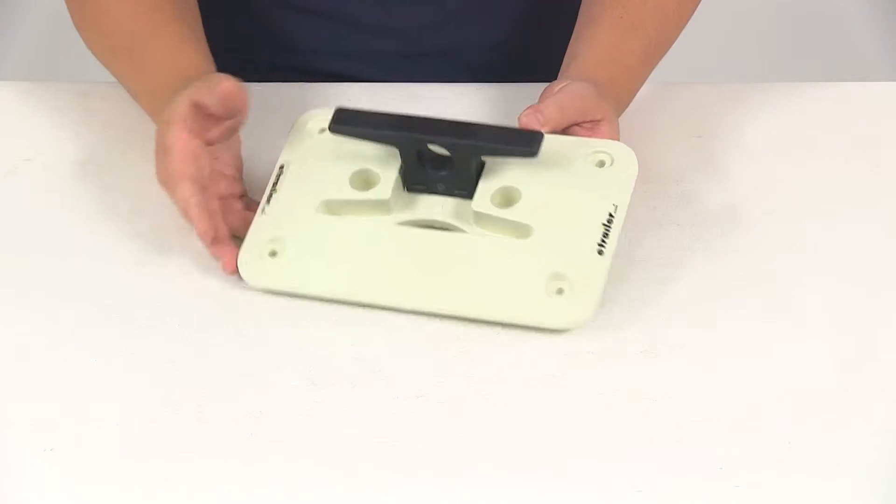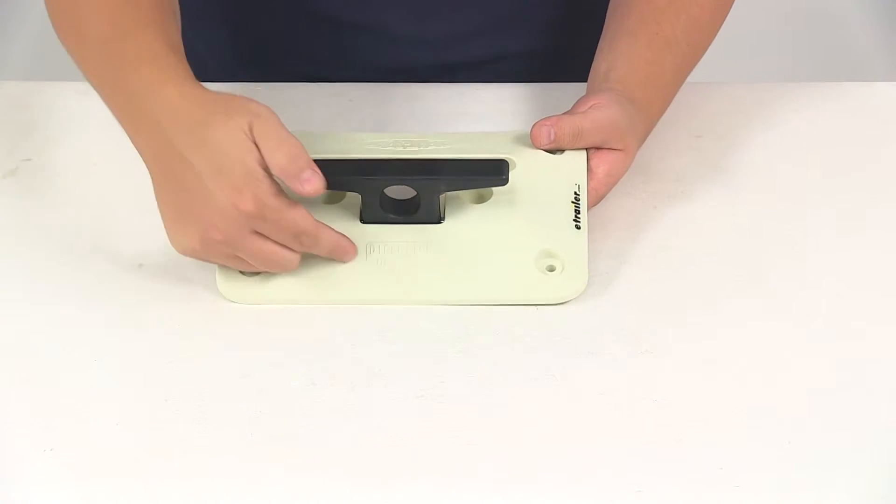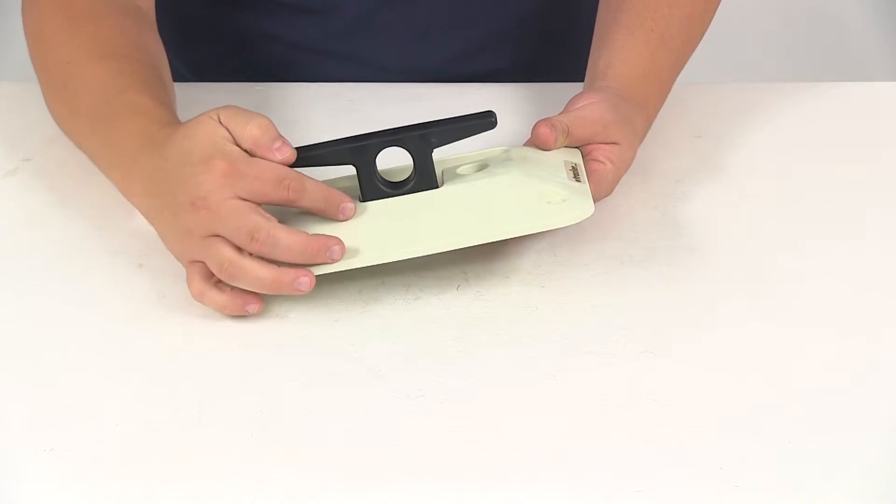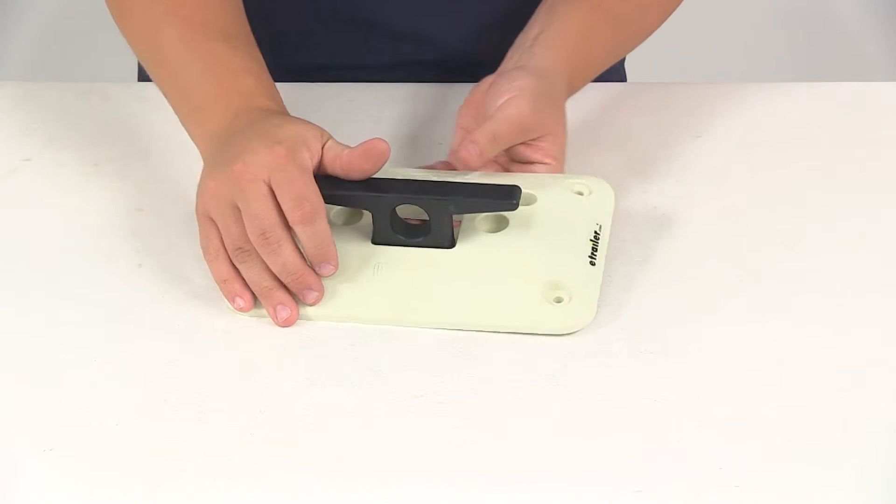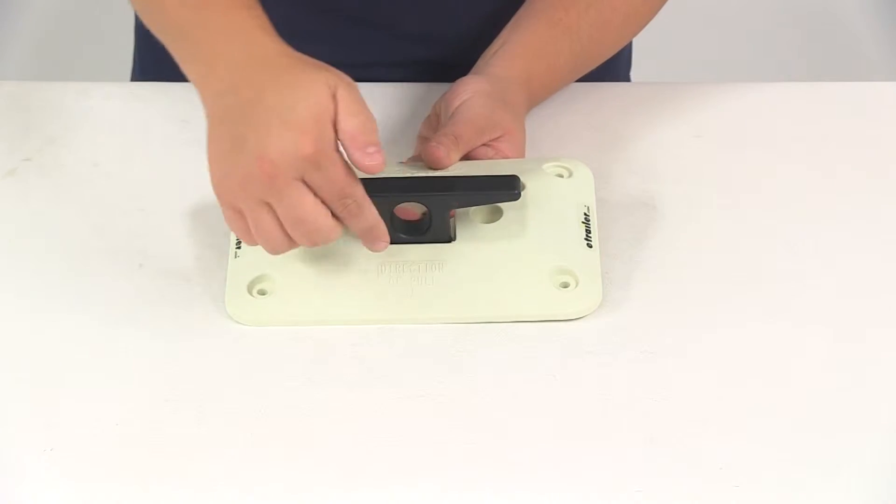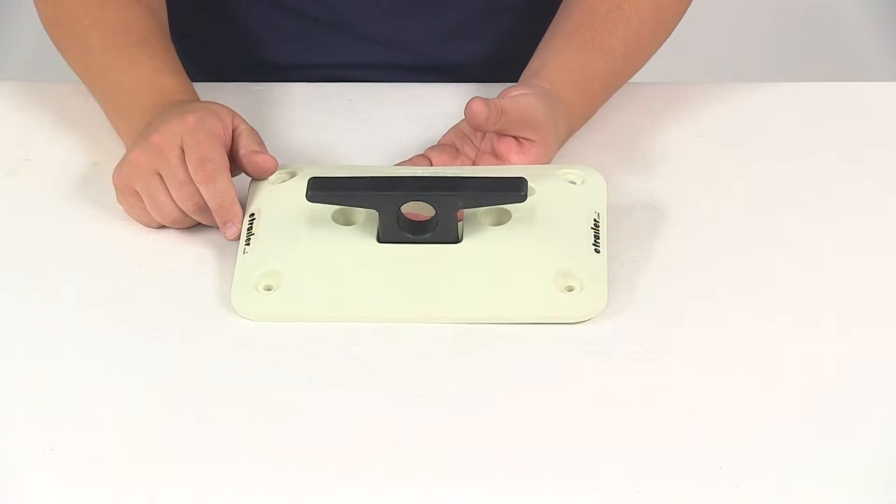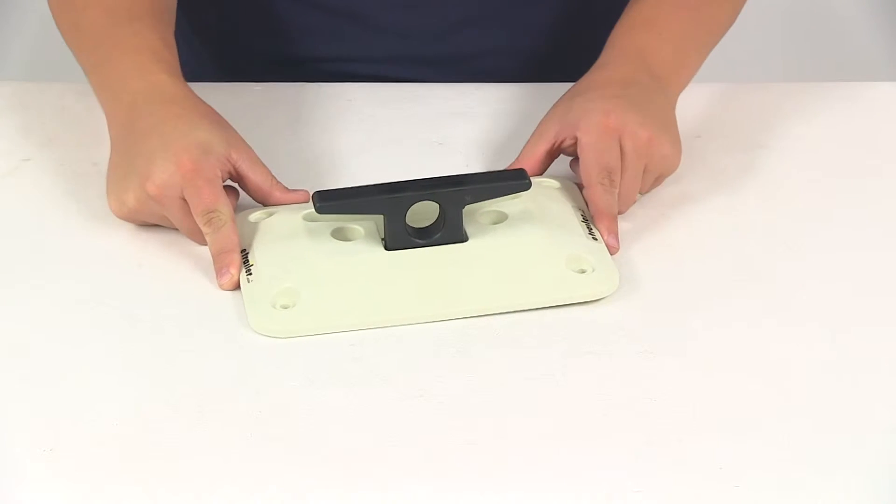The product is made in the USA. It's got a nice little reminder right here that shows you the direction of pull, so you need to make sure that the direction of pull is following that indicator right there. With this part number you're going to get one dock cleat.